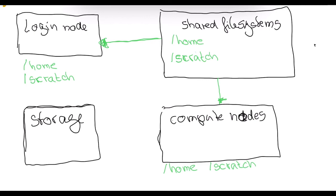Different HPC systems might have a tiered system for Scratch — so there could be a Scratch one, a Scratch two, a Scratch three, for example. These might differ in performance. The more data you can have in it or the longer you can keep data there, the slower the performance might be. If it is a high-performance file system with very fast read and write access for calculations, you might not be allowed to leave data there for a long time. Different HPC centers differ very significantly on how they provide this type of space, so it is worthwhile investigating what's available.